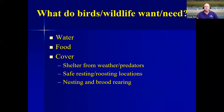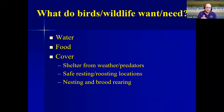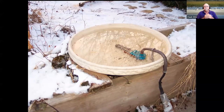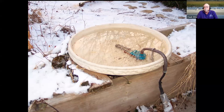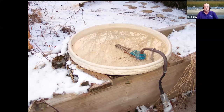Birds and wildlife all have the same basic needs: water, food, and cover. Cover can be shelter from weather or predators, safe nesting locations, and safe roosting locations. Water is the number one thing that all creatures need. Right now it's summertime in Kansas — parts of the state have been rather dry and hot. Other times of year it can be cold with no open water, so simply having a heated birdbath may attract bluebirds, robins, squirrels, or raccoons.